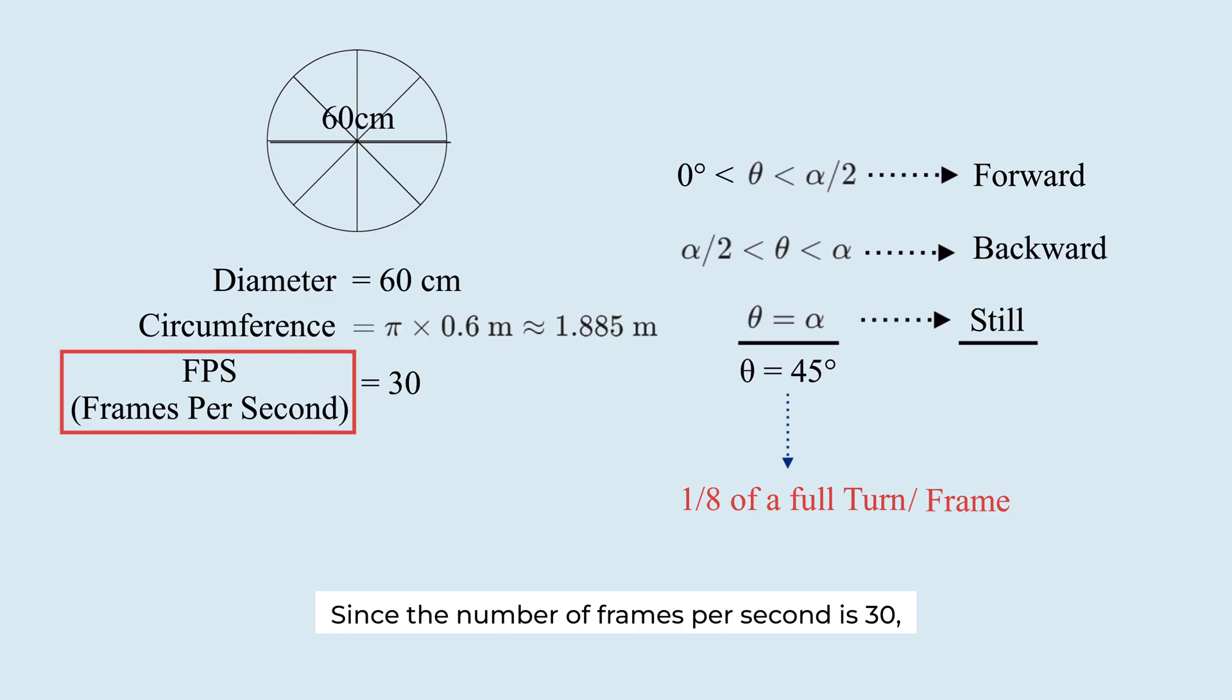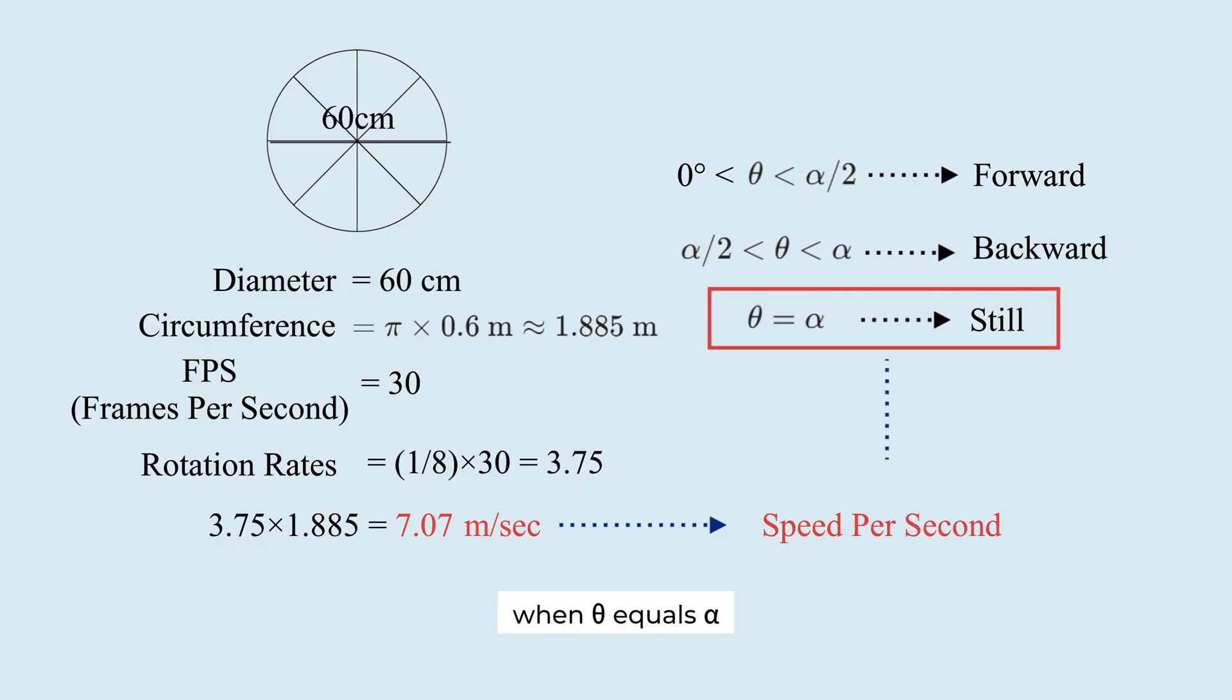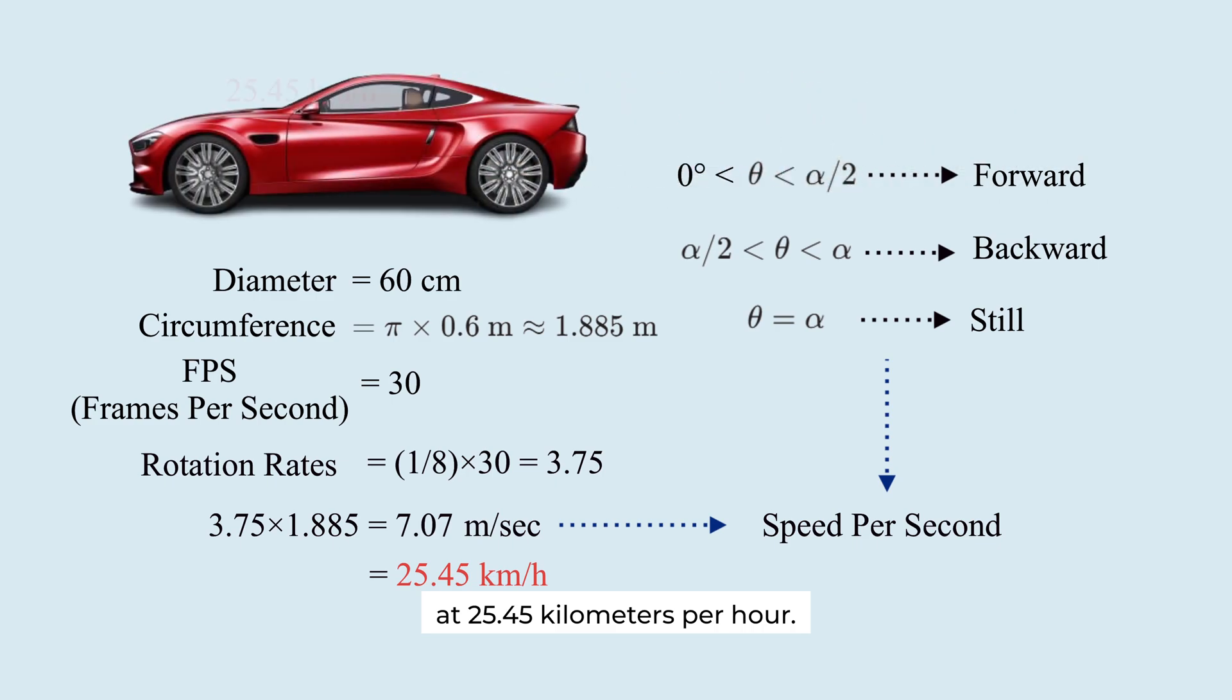Since the number of frames per second is 30, the rotation rate is 3.75 rotations per second. Multiply by the circumference. This is the distance the wheel travels in one second. In other words, the speed per second when theta equals alpha. At 25.45 km per hour, the wheel appears perfectly still.